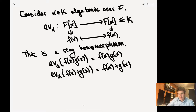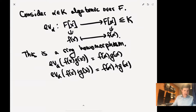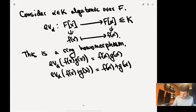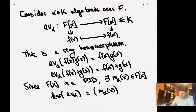The evaluation of the product is the product of the evaluations, and the evaluation of the sum is the sum of the evaluations. Now I want to look at the kernel of this map. Since F[x] is a PID, there exists some M_alpha(x) in F[x] such that the kernel of the evaluation map is generated by M_alpha(x). Moreover, this can be made unique by making it monic.